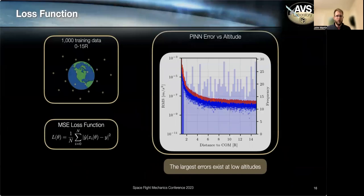So PINN gravity model one was trained with the mean squared error loss function. So we're trying to minimize the difference between the predicted acceleration and the true acceleration. And while this is a really popular cost function for most regression problems in machine learning, it doesn't really work as well for the gravity modeling problem.